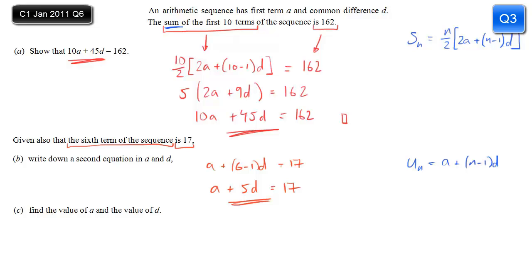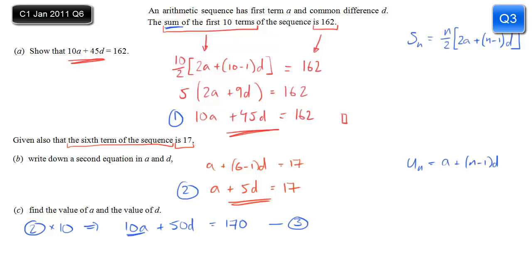Find the value of a and the value of d. We just have to solve these two equations simultaneously. The simplest approach is to multiply the second equation by 10: 10a plus 50d equals 170 — call that equation 3. Both equation 3 and equation 1 have 10a, so I can subtract equation 1 from equation 3. The 10a's cancel. 50d minus 45d gives 5d, and 170 minus 162 gives 8.